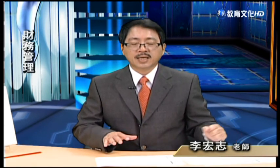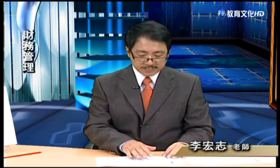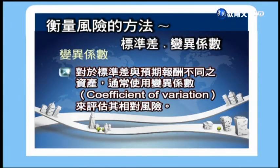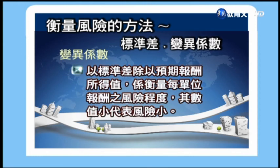談完透過標準差可以衡量風險之外，我們還有另外一種比較客觀的方法。我們剛提到兩個標準報酬都一樣，可是一個風險比較大一個比較小。接下來要談的是變異係數，它是結合報酬跟風險在一起的。對於標準差跟預期報酬不同的資產，我們通常使用變異係數來評估相對的風險。變異係數是以標準差除以預期報酬所得的值，可以衡量每獲得一單位報酬相對要承受的風險。當然風險越小越好。